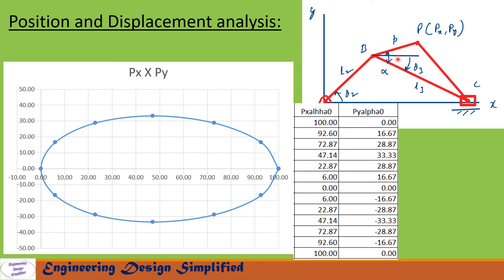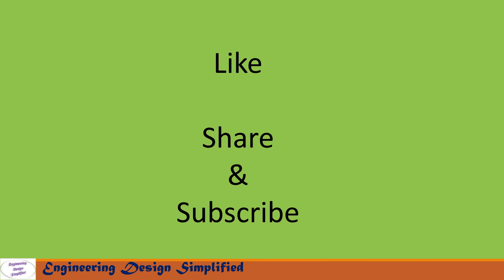Similarly, this graph plots px versus py when alpha equals 0 degrees, meaning P falls on the coupler itself. At 0 degrees crank angle, px is 100 mm and py is 0. At 30 degrees crank angle, px is 92.6 mm and py is 16.67 mm. As the crank rotates 360 degrees counterclockwise, the point on the coupler traces this graph all the way back to the original position. That's all for today's video — if you like this content, please like, share, and subscribe. Thanks for watching.